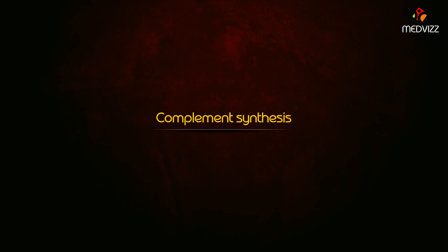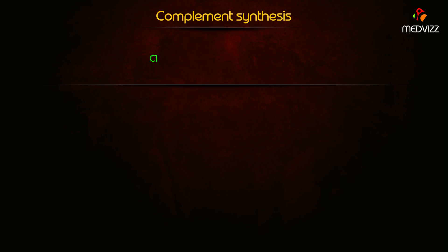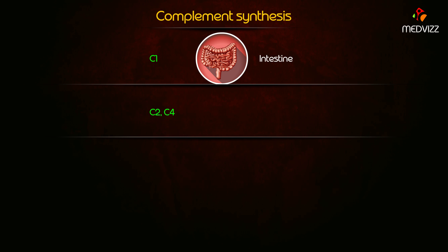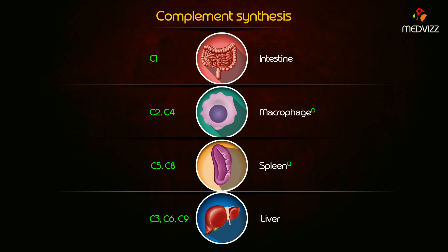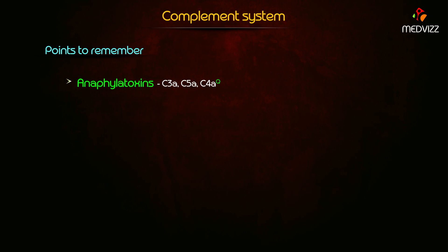Regarding complement synthesis: C1 is synthesized in the intestine, C2 and C4 in macrophages, C5 and C8 in the spleen, and C3, C6, and C9 in the liver. The anaphylatoxins are C3a, C5a, and C4a — 'A stands for anaphylatoxin' is a useful mnemonic.